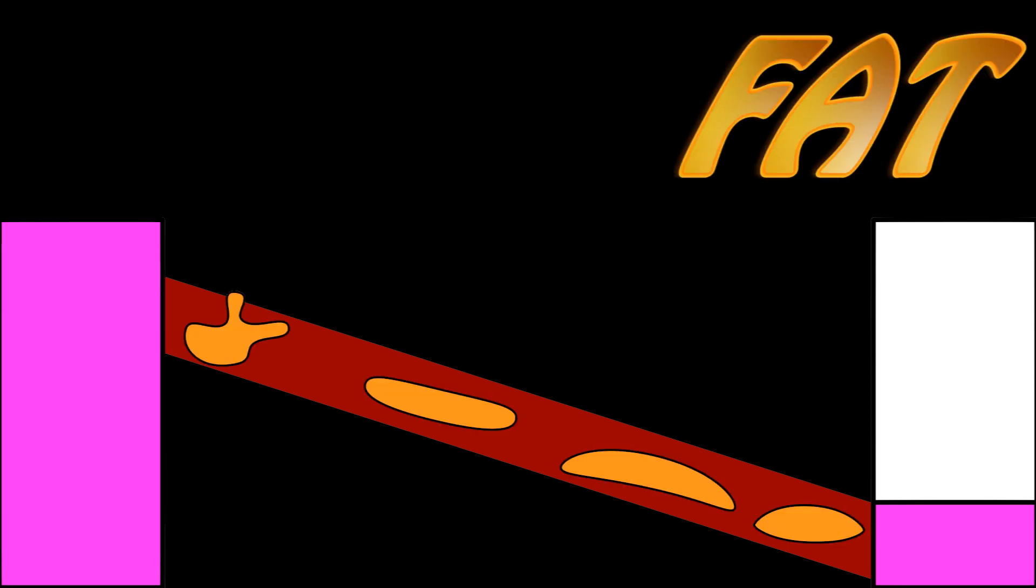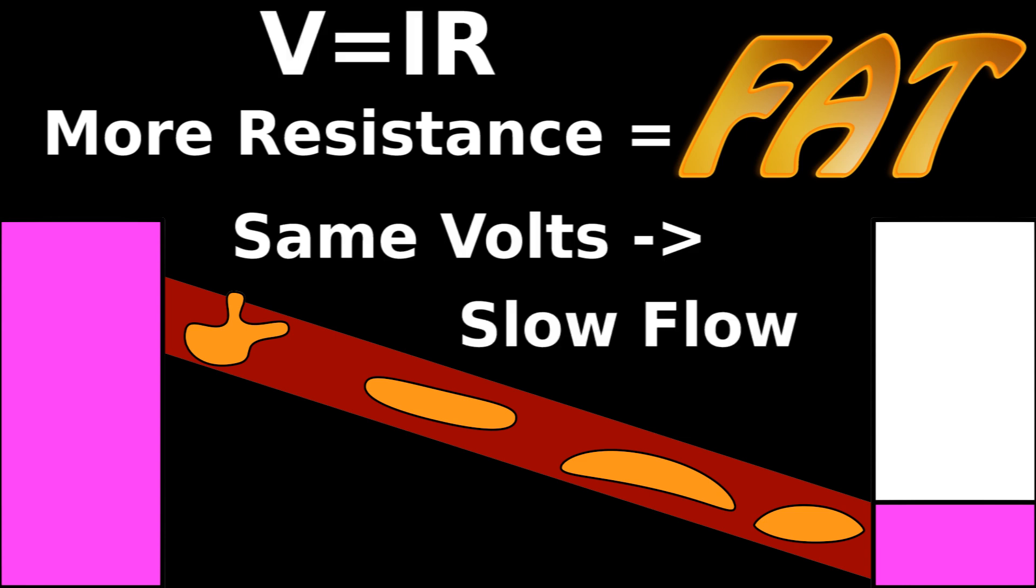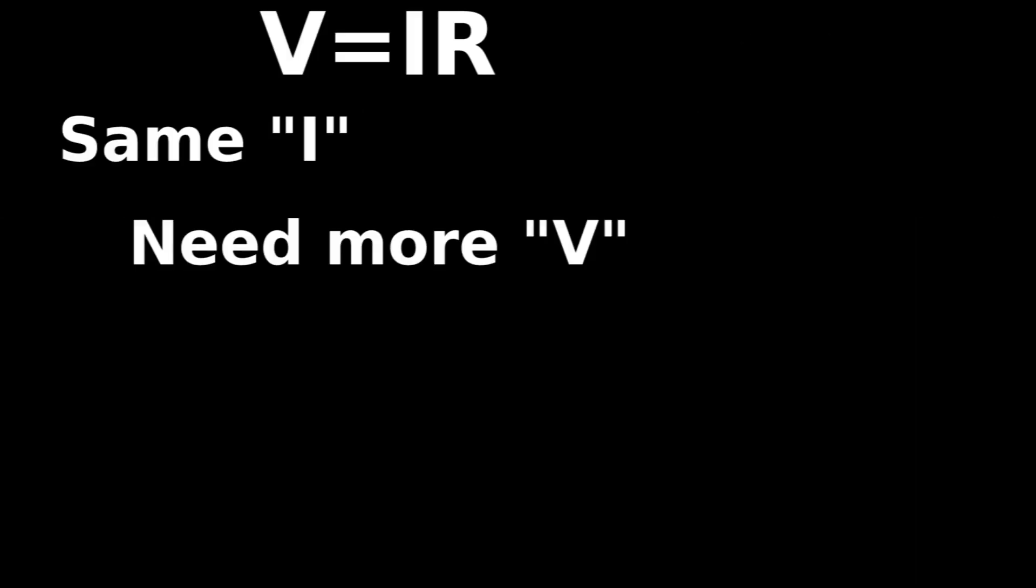Clogging arteries with fat creates more resistance, so if your heart has the same pressure difference, blood flow is slower. To maintain the correct blood supply, your heart contracts with greater force, increasing the voltage to overcome this increased resistance.